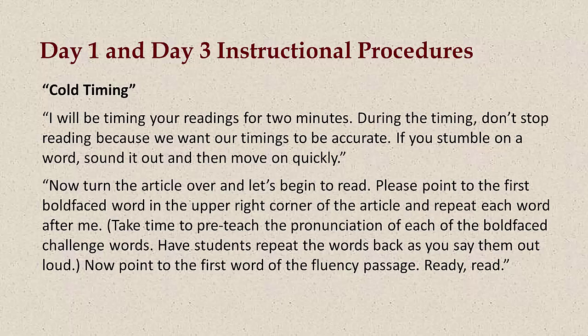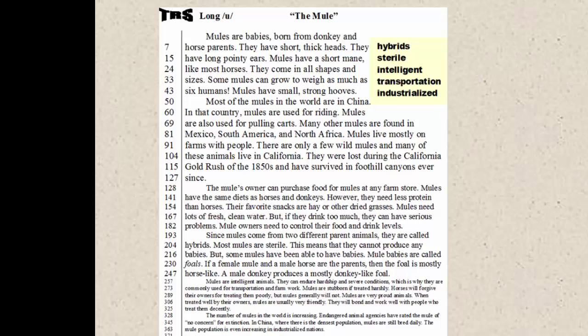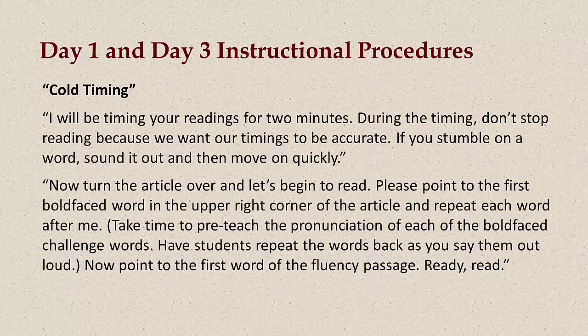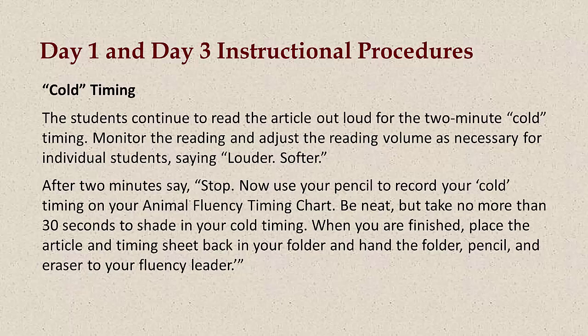Now turn the article over and let's begin to read. Please point to the first bold-faced word in the upper right-hand corner of the article and repeat each word after me. Take time to pre-teach the pronunciation of each of the bold-faced challenge words. Have students repeat the words back after you say them out loud. Now point to the first word of the fluency passage, ready, read. The students continue to read the article out loud for the two-minute cold timing. Monitor the reading and adjust reading volume as necessary for individual students, saying louder or softer. After two minutes, say stop. Now use your pencil to record your cold timing on your animal fluency timing chart. Be neat, but take no more than 30 seconds to shade in your cold timing.